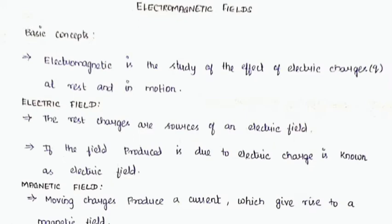What is electric field? Rest charges are the source of an electric field. Charges can be either positively charged or negatively charged, called electrons. When electrons are in rest mode, we can experience some kind of force or energy around those rest charges — this is nothing but the electric field. The field produced due to electric charge is known as the electric field.